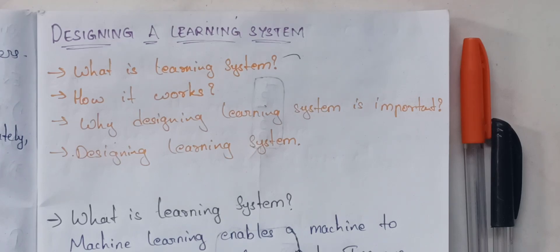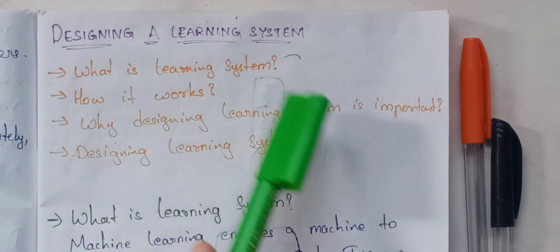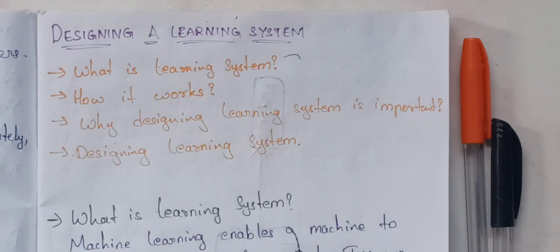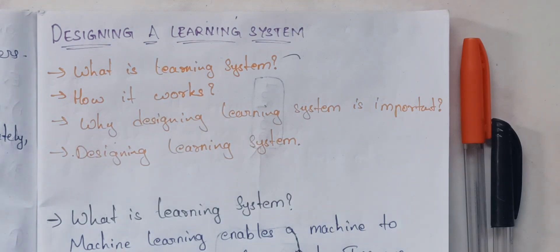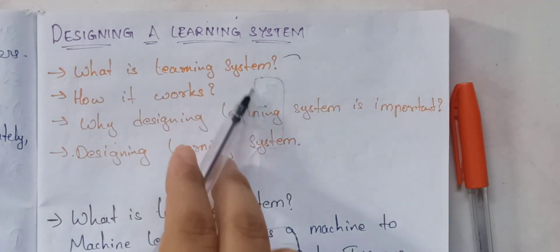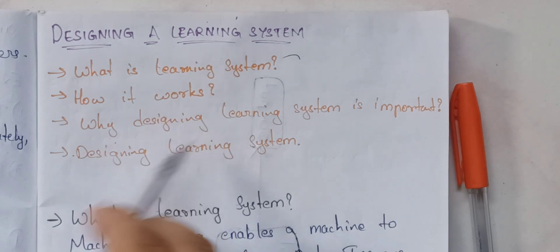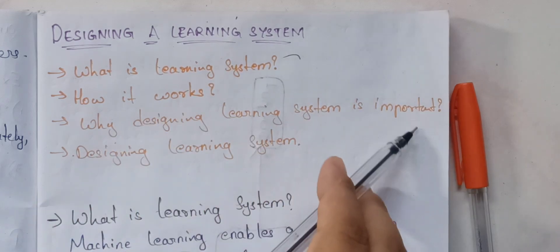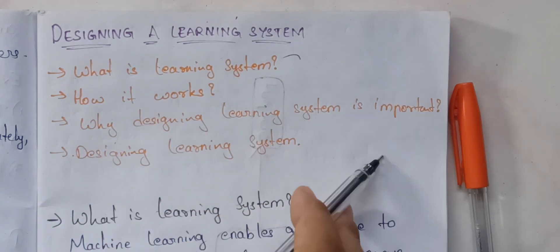We will start with the third topic of machine learning unit 1. It is called designing a learning system. I am going to give you a brief introduction and an example. So, let's talk about all the topics. First of all, what is a learning system? How it works? Why designing a learning system is important?